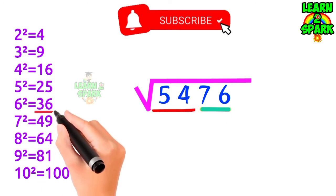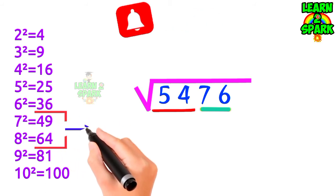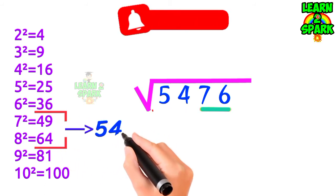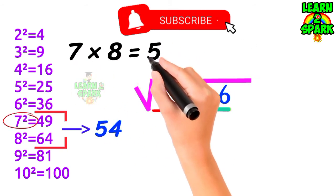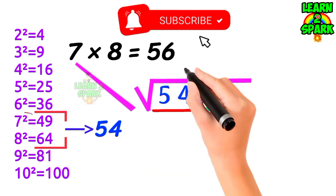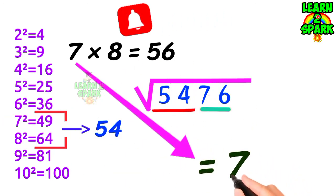Now consider the first group which contains 54 which falls between the perfect square numbers 49 and 64. Now consider the roots of these numbers, that is 7 and 8. Multiply them, you will get 56. Now take down the smallest root, that is 7, for your final answer.